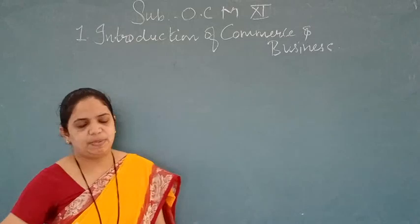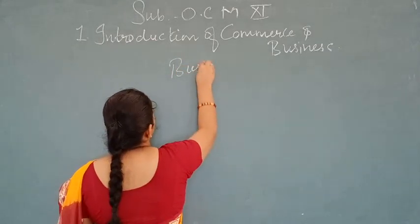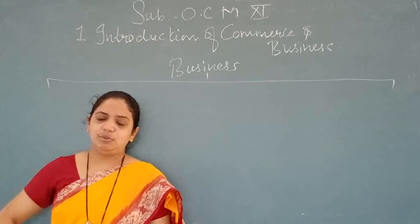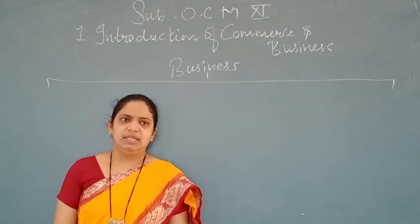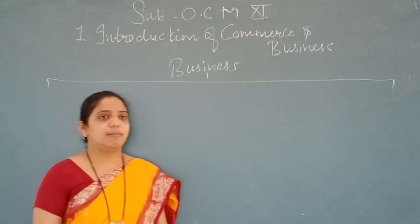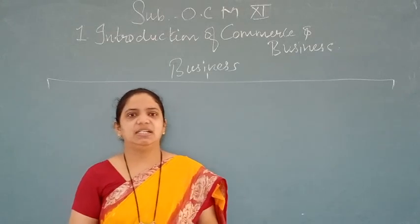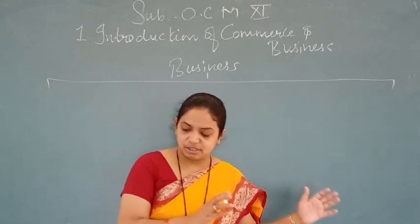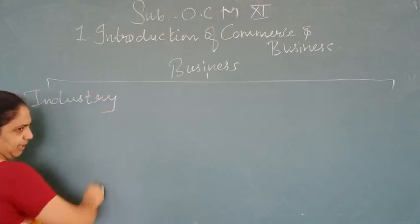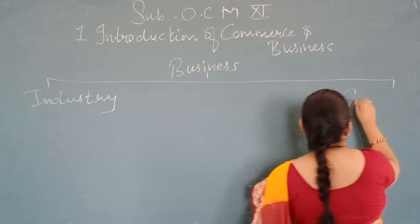We are going to start the next topic, which is the last section of this chapter — the classification of business activity. We will divide business into two big parts. There is a big diagram in your textbook on page number 8. Business activities are broadly classified into two big parts: industry and commerce.